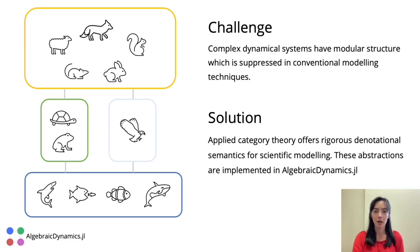A common experience in scientific modeling is to have a complex dynamical system, for example an ecosystem with, say, 100 species in it. But these dynamical systems often come with some sort of modular structure. For example, here we can divide the animals into land animals, river animals, air animals, and water animals.